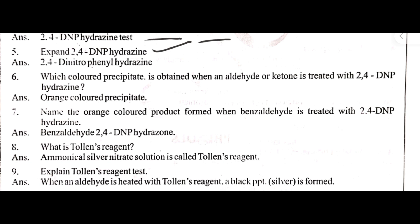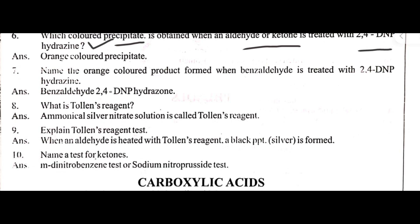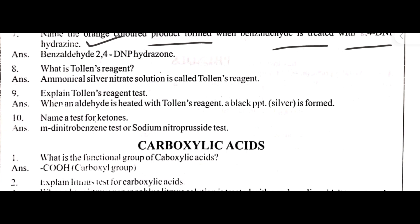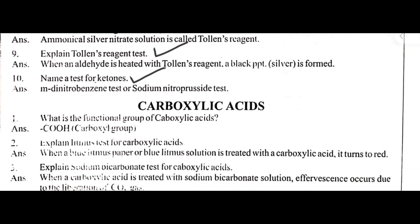Which colored precipitate is observed when an aldehyde or ketone is treated with 2,4-DNP hydrazine? Name the orange colored product formed when benzaldehyde is treated with 2,4-DNP hydrazine. What is Tollens' reagent? Explain the Tollens' reagent test. Name a test for ketones.